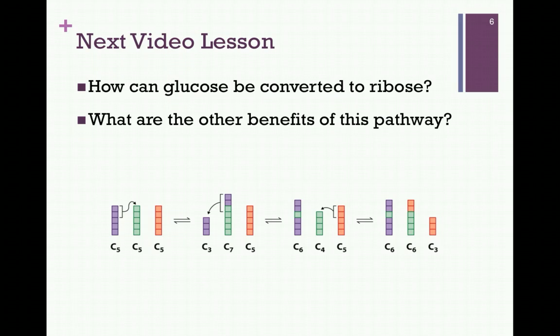In our next video lesson, we'll review the process by which we convert the 6-carbon sugar glucose to the 5-carbon sugar ribose, and consider the benefits of this pathway beyond simply the production of ribose.